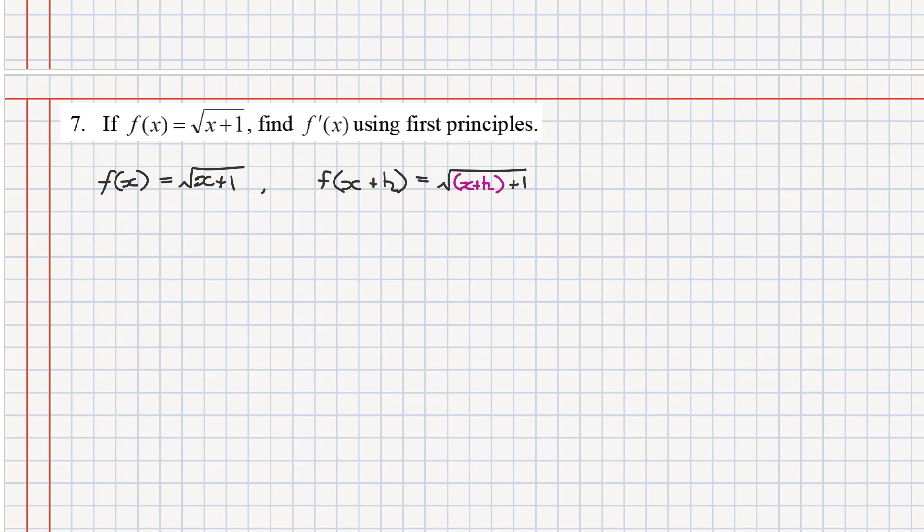Now the next step is we're going for a derivative using first principles. We're going to write out the first principles technique, which is f dash of x is the limit of h as it approaches zero. That's going to be f of x plus h take f of x, and that is all over h.